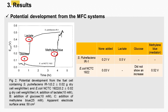The anode compartment of the MFC was loaded with freshly prepared suspension to observe potential development under open-circuit conditions. Figure 2 shows the change in the potential of the fuel cells. Before the fuel was added, approximately 0.21 volt and 0.03 volt were observed from the MFC containing suspensions of S. putrefaciens IR1 and E. coli, respectively. The addition of lactate as the fuel to the cell containing IR1 resulted in a rapid rise in potential up to 0.5 volt. The MFC containing E. coli did not show an increase in potential following the addition of glucose as fuel.